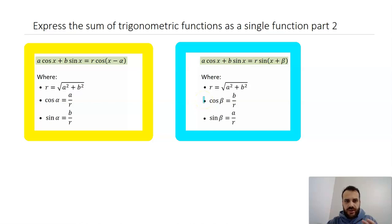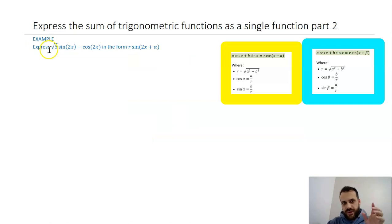Okay, so that's where we're at. Now, if we were to go and do an example like this, express root 3 sine 2x minus cos 2x in the form r sine 2x plus alpha. Now, how are we going to use these formulas when it's not x, it's 2x.